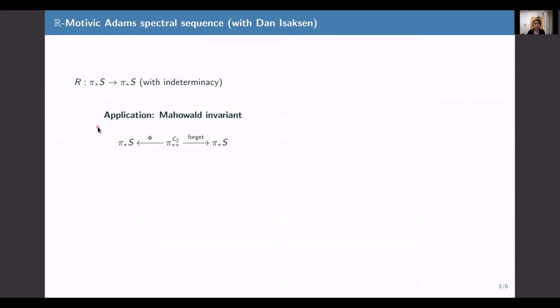I'll briefly summarize a construction of this Mahowald invariant that's due to Bruner and Greenlees. So if you start with some element in the stable homotopy groups of spheres, you can lift it to a C2-equivariant homotopy class by lifting over the fixed points functor. Then you do this equivariant computation, you divide by a power of this element called rho, and then you apply the forgetful map.